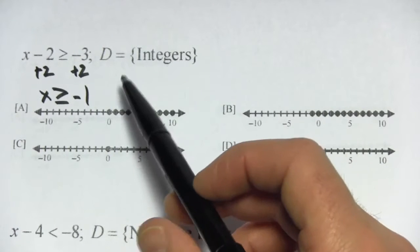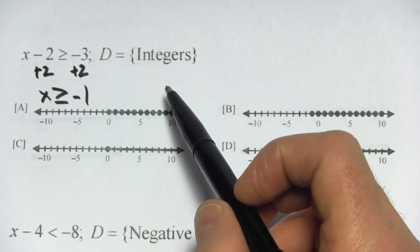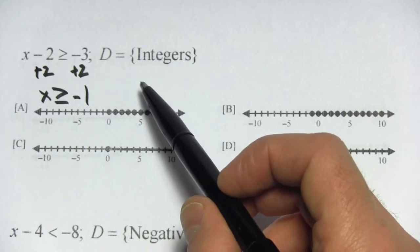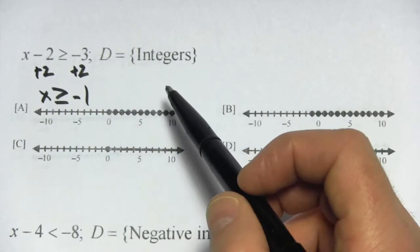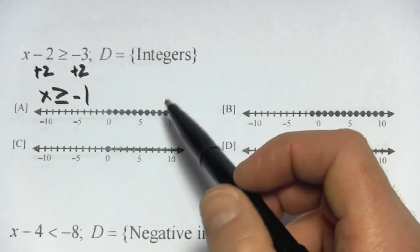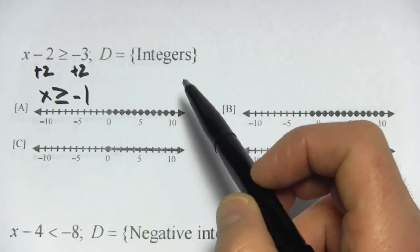Now there's a little bit of a trick here. The domain is just the integers. What that means is it's numbers like 1, 2, 3, 4, negative 1, negative 2, 0, etc. But not the numbers in between.